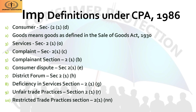This slide deals with the 10 important definitions under CPA Act 1986. The first definition is 'consumer.' Under Section 2(1)(d) of the CPA Act, a person is called a consumer who avails services and buys any goods for self-use only. Importantly, if the person buys goods or avails services for resale or commercial purposes, then they are not considered a consumer.